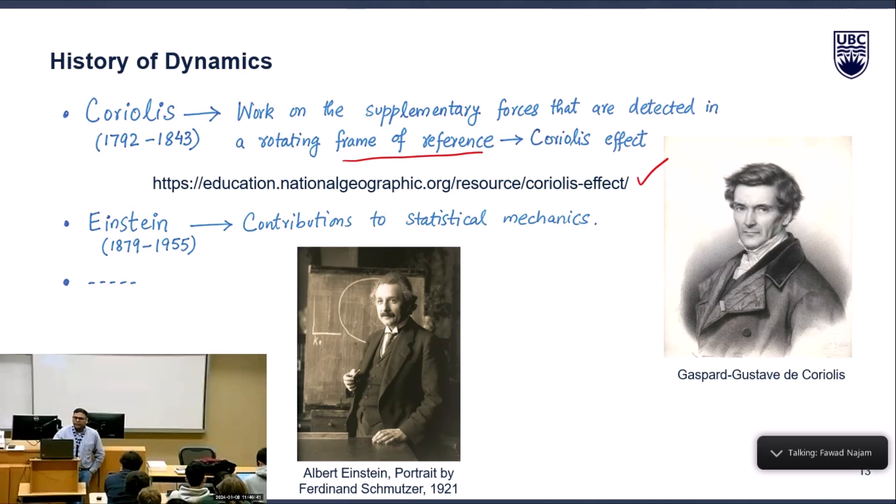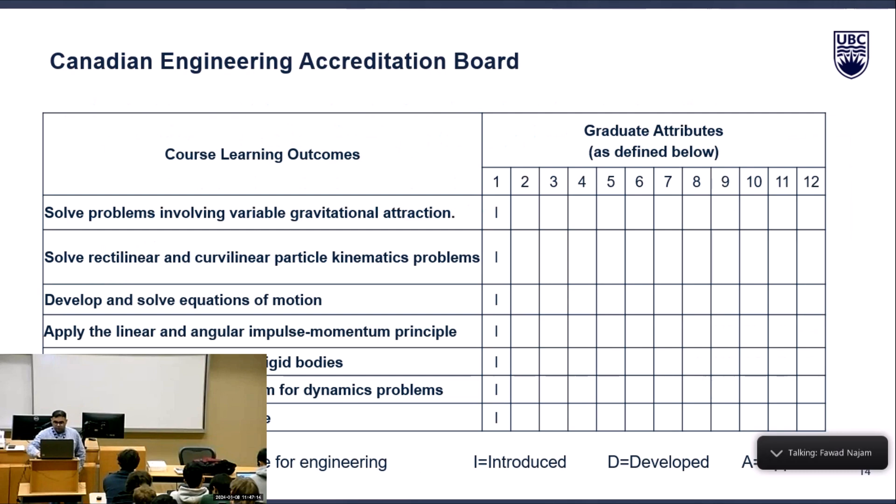Last in our list is Albert Einstein. His main contributions are not to rigid or deformable body mechanics but to statistical mechanics, something which we might not be touching in this particular course. This was a brief history of this course. You have seen some big names, some big phenomena associated with those names, but there is more to that subject. There are continuous developments in calculus because that will be the main tool to describe the motion or mechanics of moving objects.